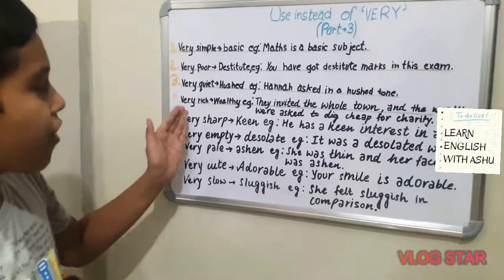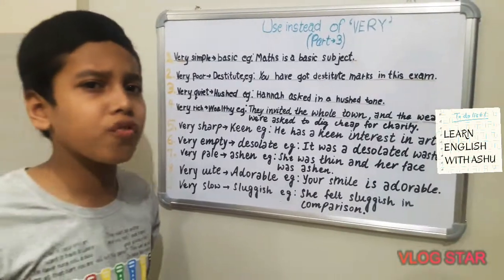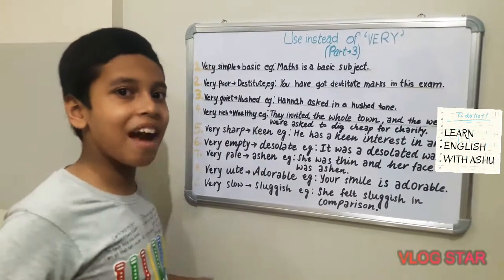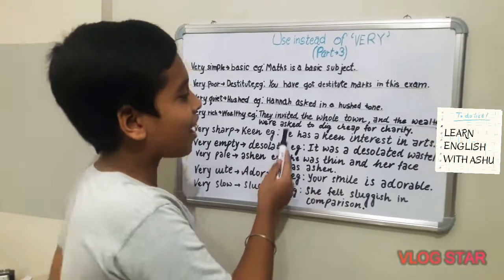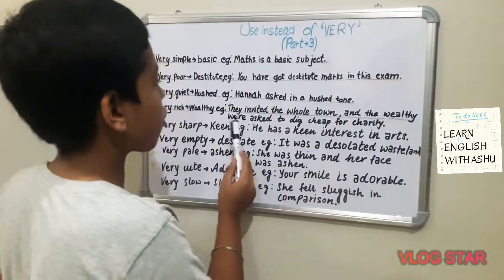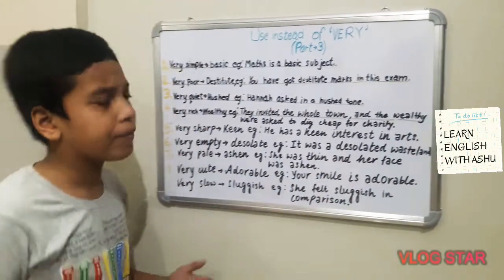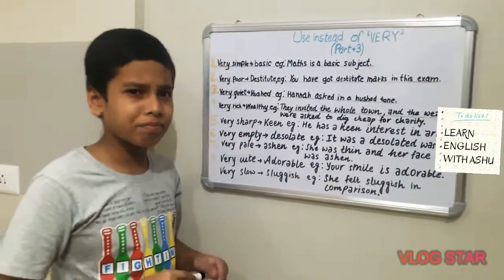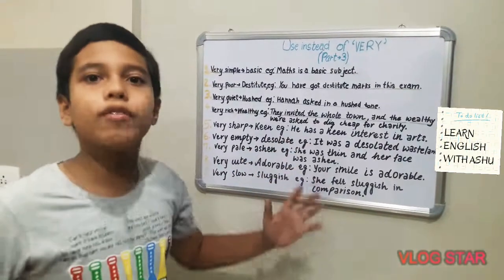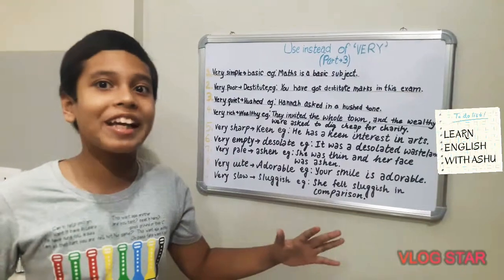Our next word is 'very rich.' Instead of very rich, we can say 'wealthy.' For example, they invited the whole town and the wealthy were asked to contribute for the charity. It means the whole town was invited and it's a very big amount.